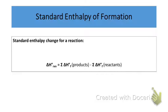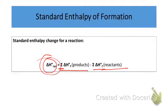Why are standard enthalpy of formation values so critical? It's because we can use them to calculate the delta H of an overall reaction, using this equation — very similar to the bond enthalpies from lesson five. The delta H of the reaction equals the sum of the heat of formation values of the products minus the sum of the heat of formation values of the reactants.